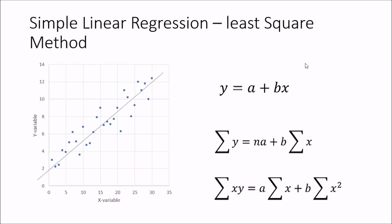The requirement is finding the A and B values — the intercept and the gradient — so that we can find the equation. To do that, we have two simultaneous equations: Sigma Y equals NA plus B·Sigma X, and Sigma XY equals A·Sigma X plus B·Sigma X squared. We substitute the values of X and Y, giving us two equations with A and B as variables, which we solve simultaneously to get A and B.